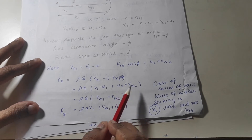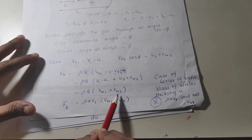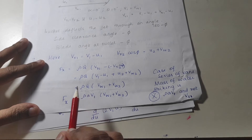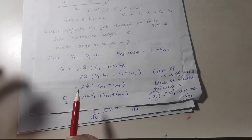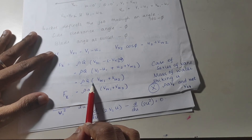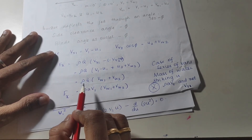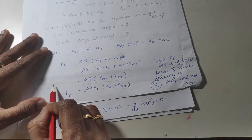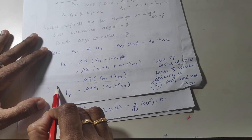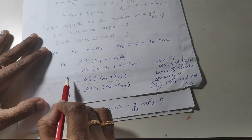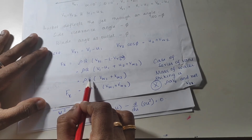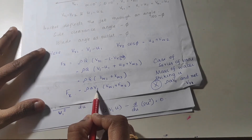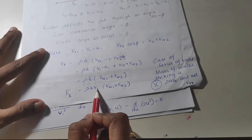Since vr2·cosφ equals u2 plus vw2, and substituting vr1 = v1 minus u1, we finally get F = ρQ × (vw1 plus vw2). For discharge Q, we might wonder whether to use v1 or vr1. Since discharge is the amount of water coming out from the nozzle, we use Q = A × v1. Therefore, Fx = ρ·A·v1 × (vw1 plus vw2).